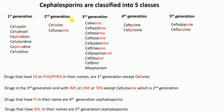Except these, the remaining cephalosporins fall in the second generation cephalosporin class. They are Cefoxitin, Cefprozil, Cefotetan, and Cefmetazole. These are second generation cephalosporins.